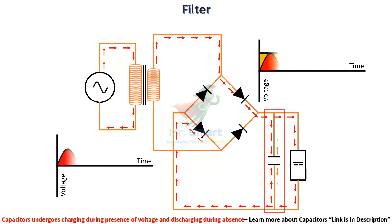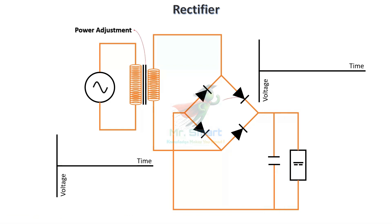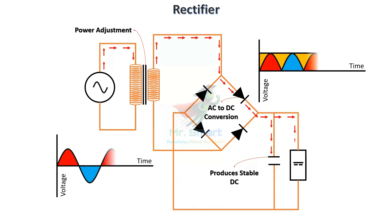Usually a capacitor smoothens the pulsating DC output from the rectifier, providing a stable DC voltage for electronic devices. In short, in a rectifier, AC power is adjusted by the transformer, converted to DC by diodes, and smoothened by the filter. This is how a rectifier ensures a reliable DC output.